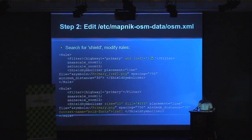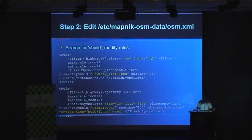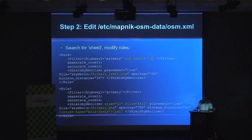The spacing and minimum distance settings specify how far apart the same shield will display on the map. If you have a long stretch of road, you may need to display the shield multiple times, so these two values define how far apart each instance appears so they don't overlap.